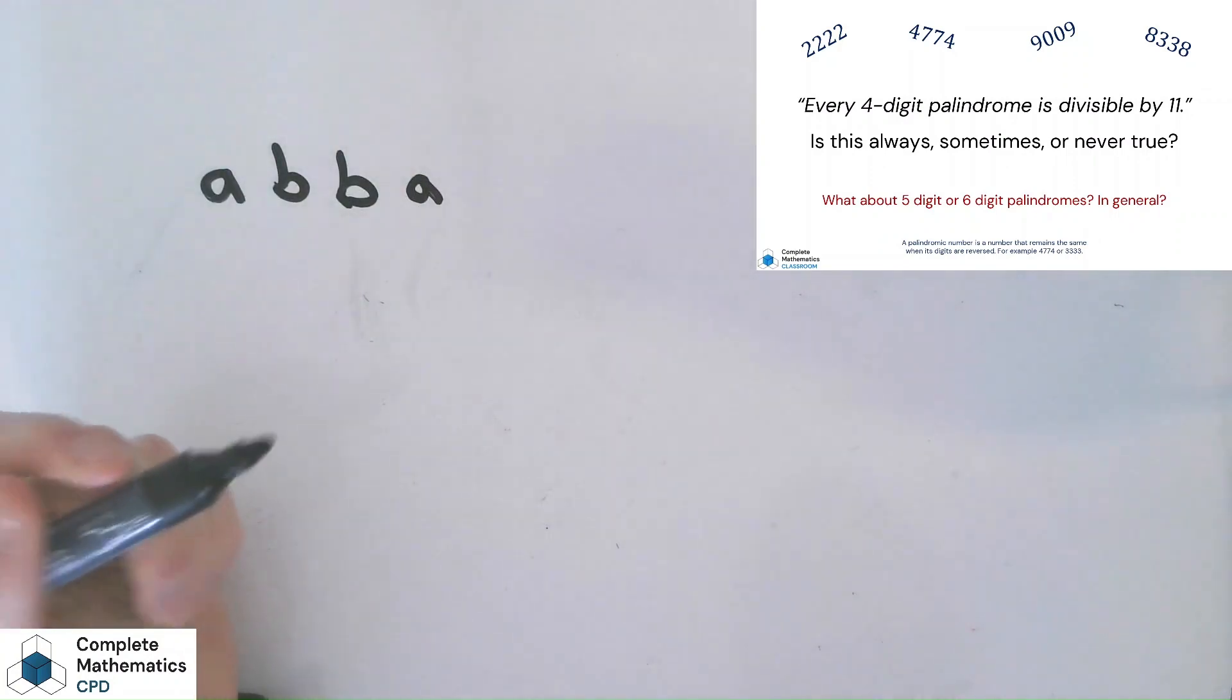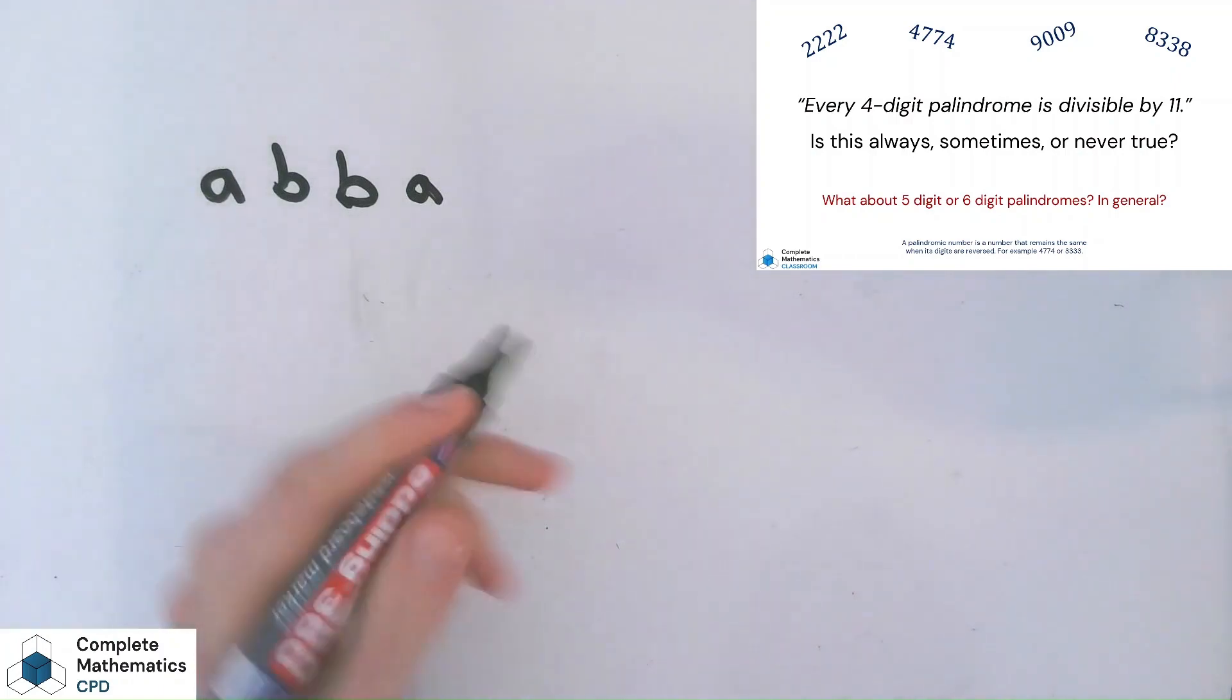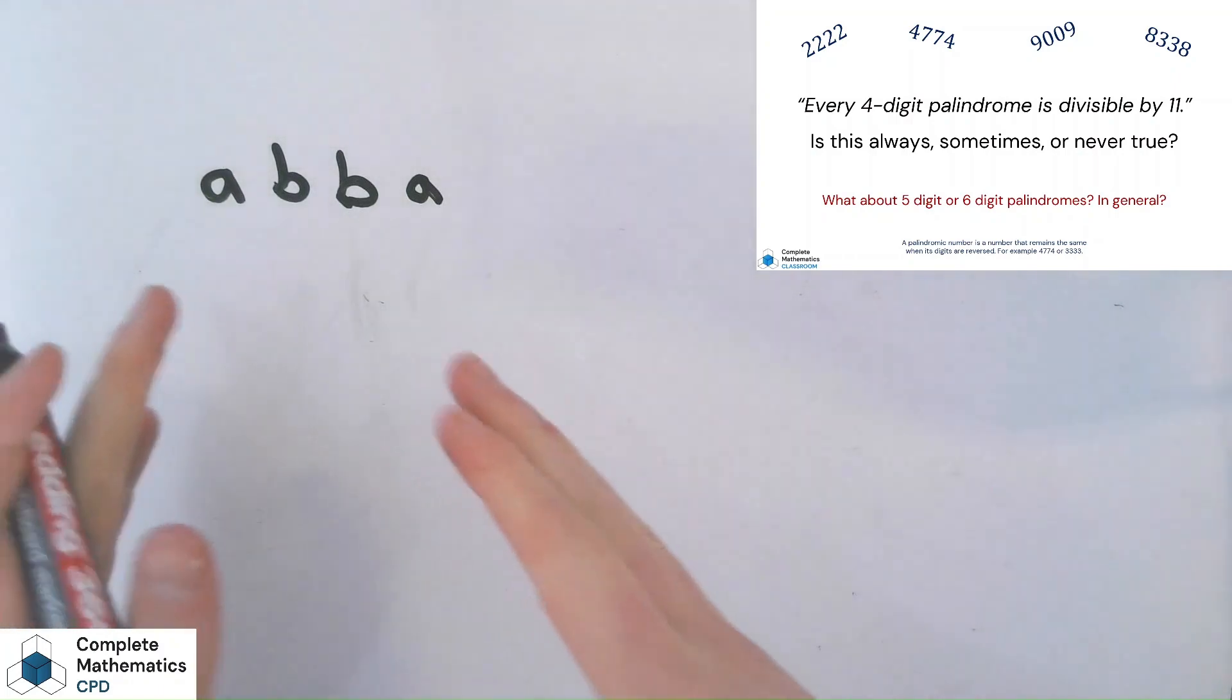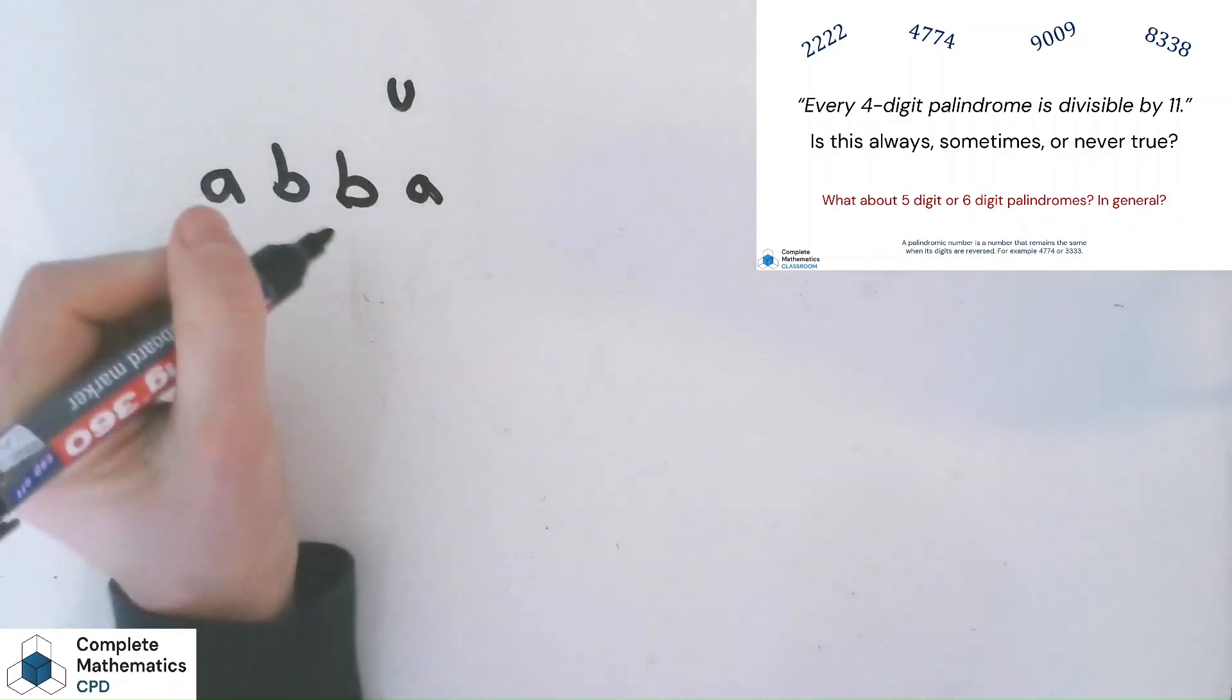And is this a palindrome? And pupils will hopefully say, yes, it is. And now I like to say, how many A's and how many B's can you see there? And their instinctive response is going to be, oh, I can see two A's and two B's. But here's the opportunity to link it with what we've just done with the place value stuff.